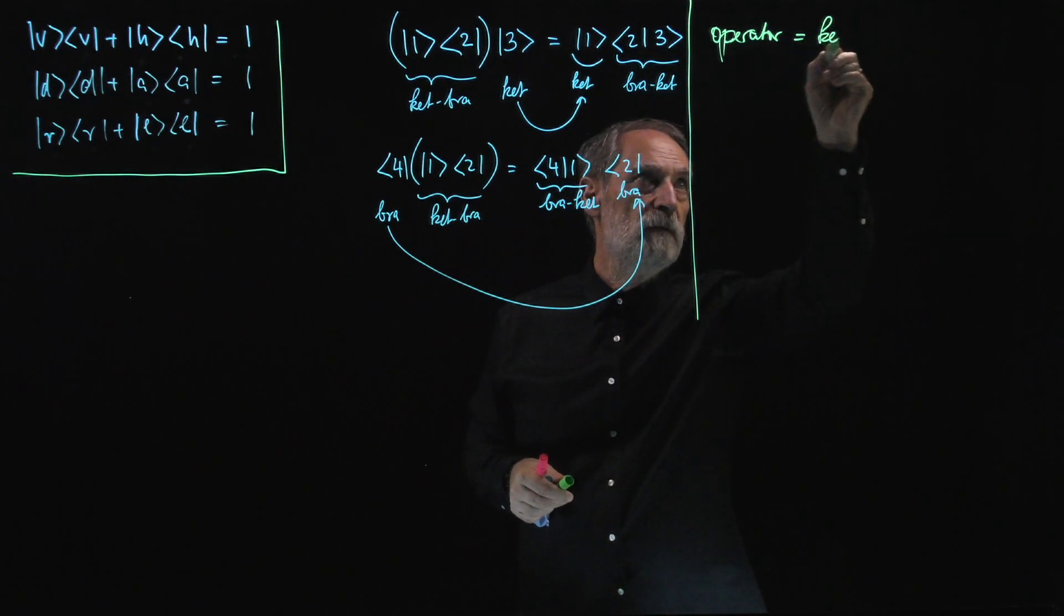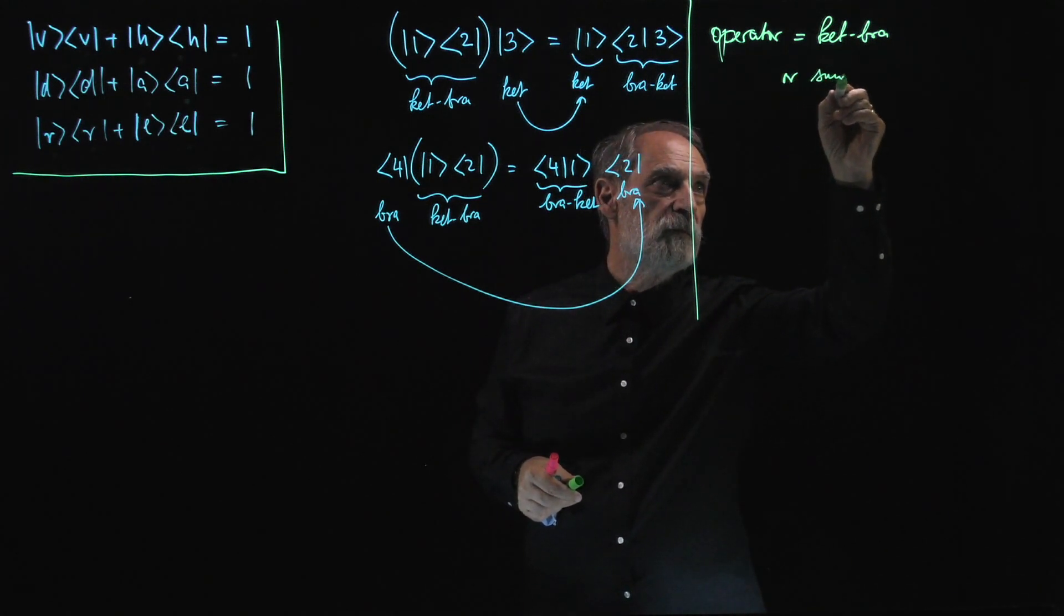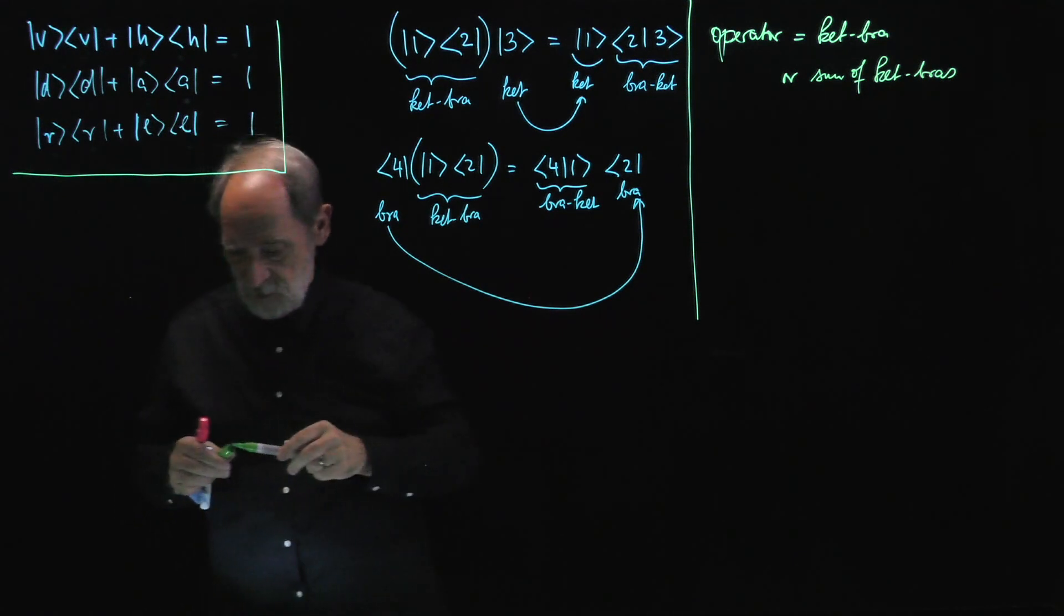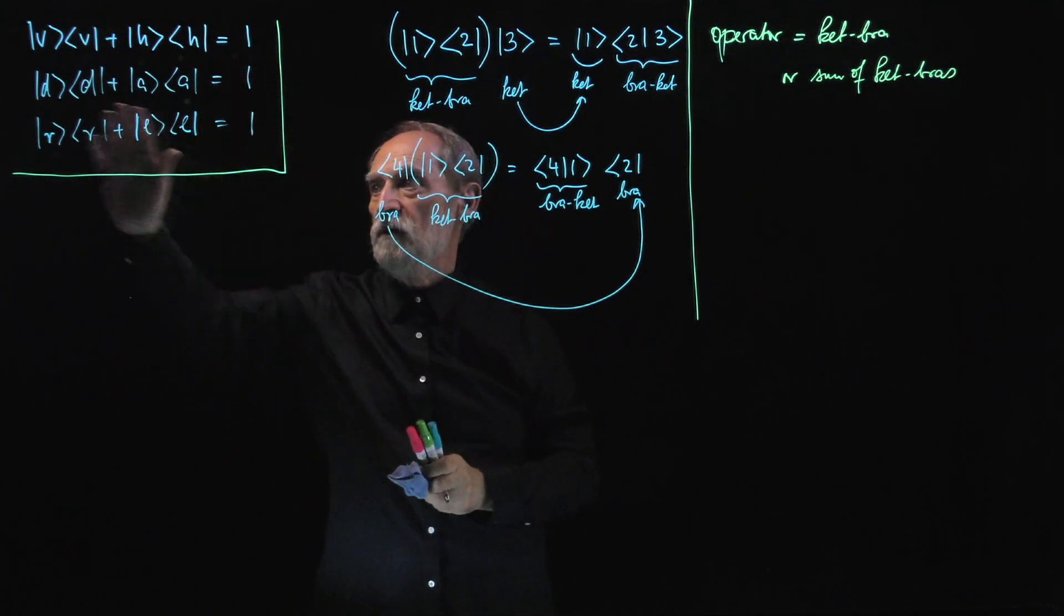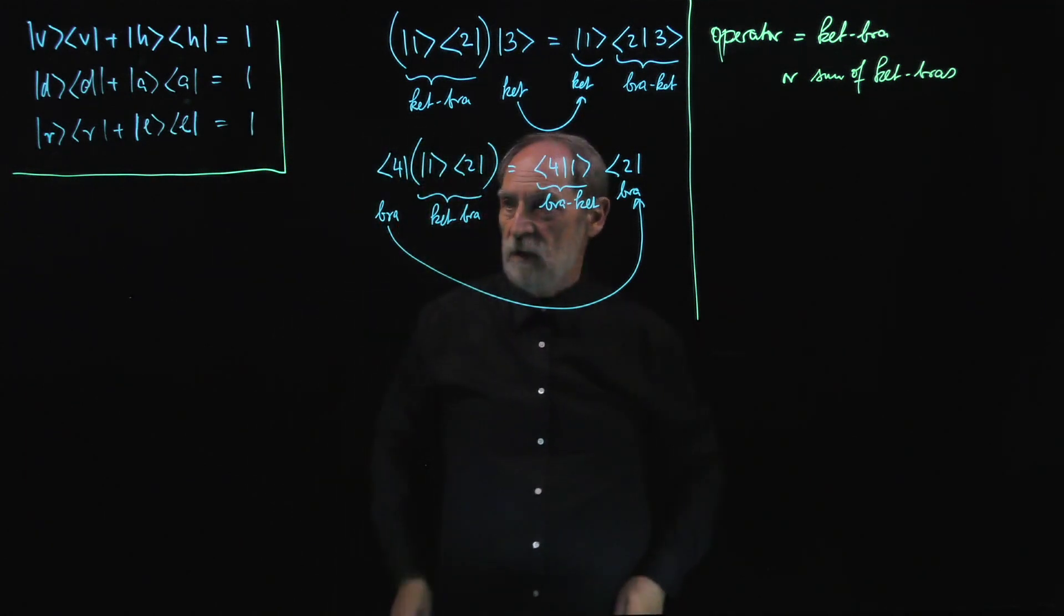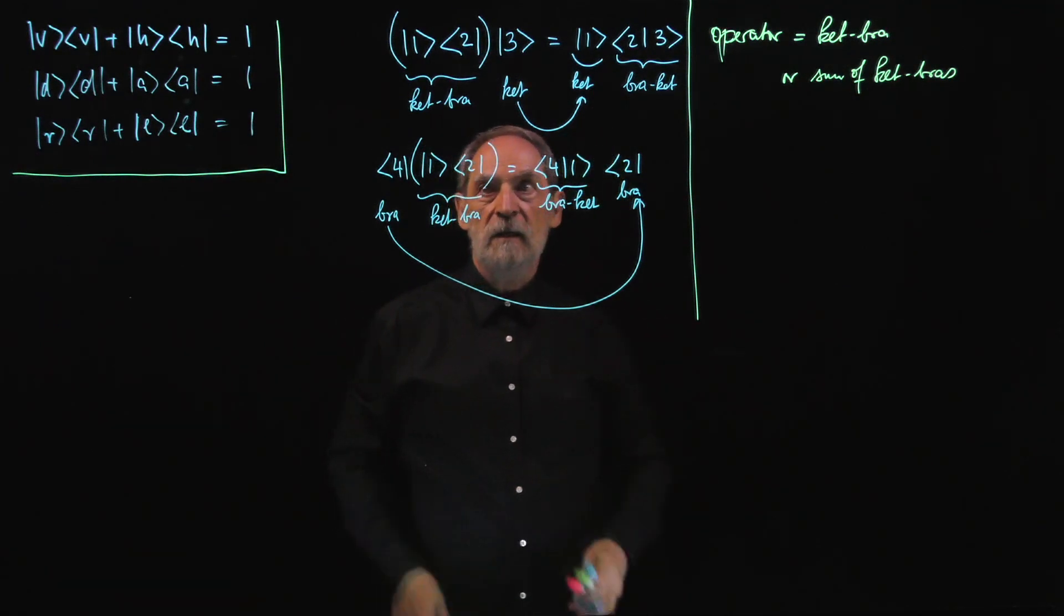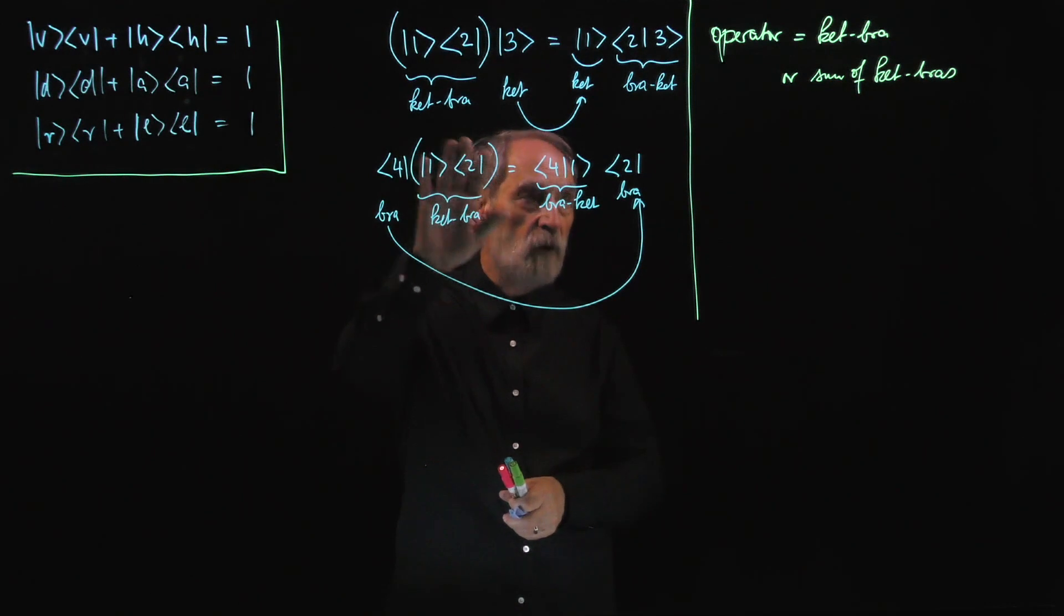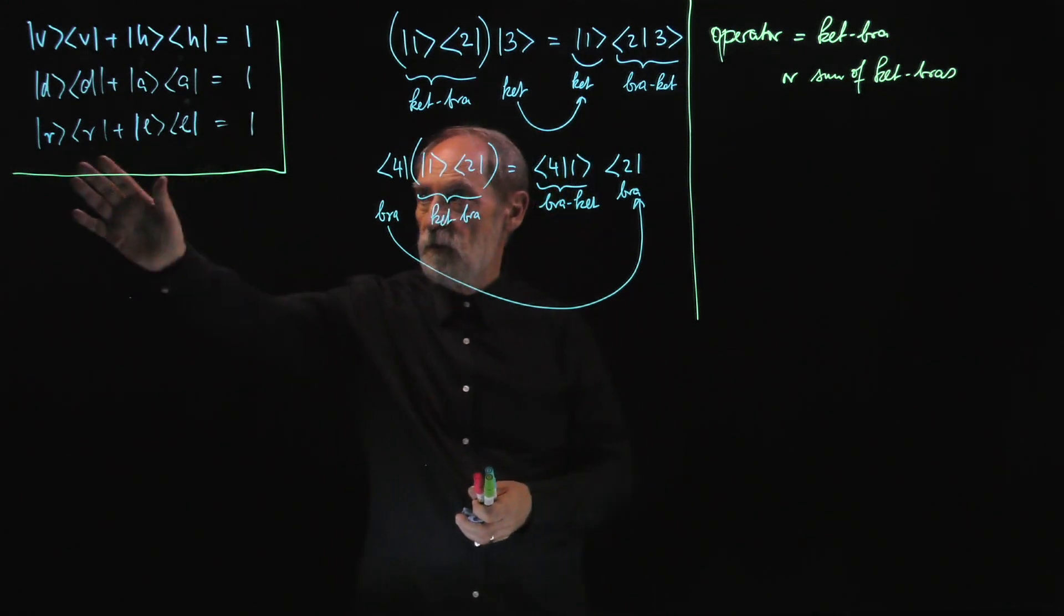So that introduces the notion of an operator. An operator is a ket-bra, or a sum of ket-bras. Sums of ket-bras, very simple sums of ket-bras, we have already seen. And the operator that we get as a result of this summation is the identity. So three different ways of writing the identity as the sum of two ket-bras.